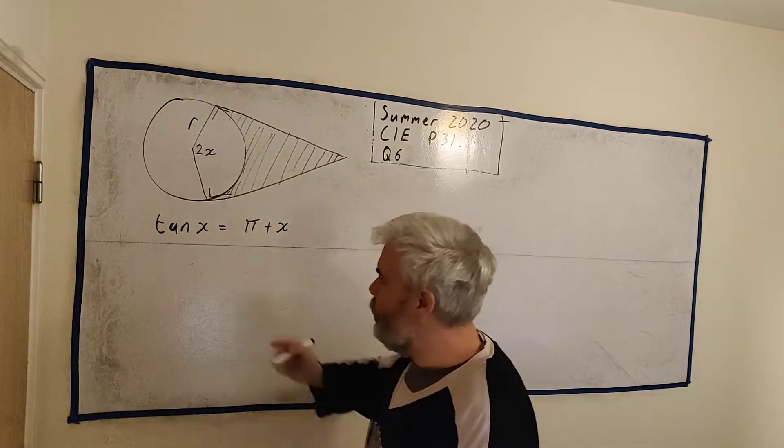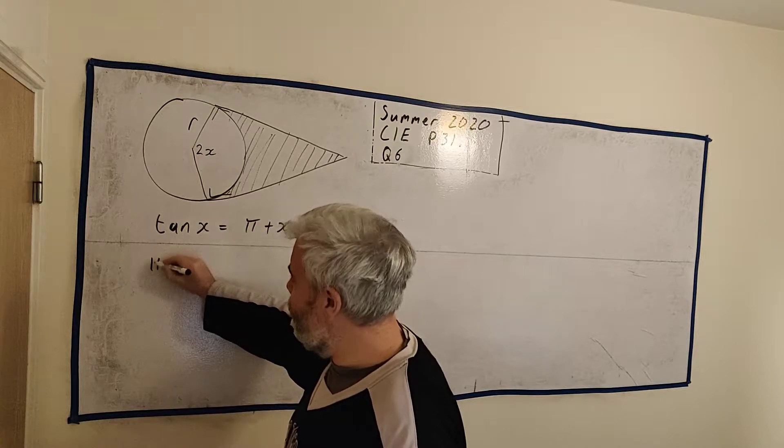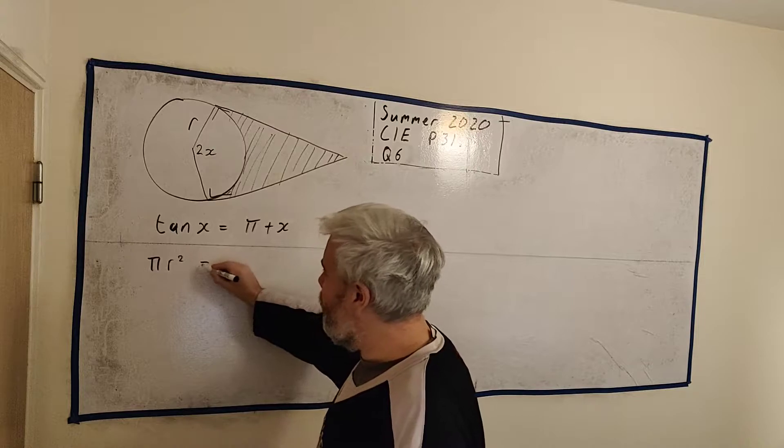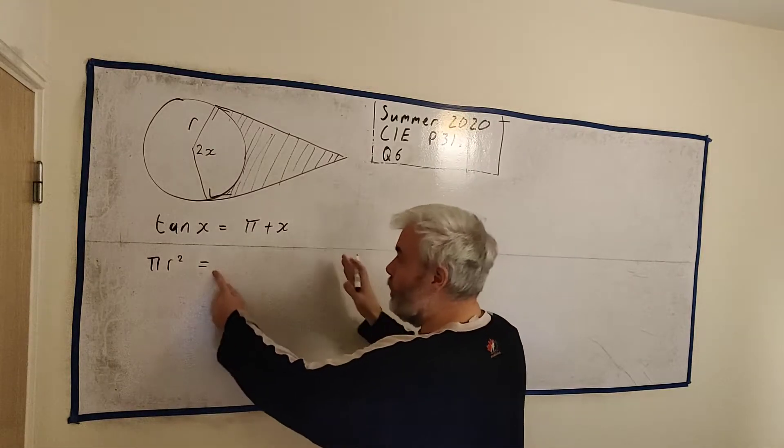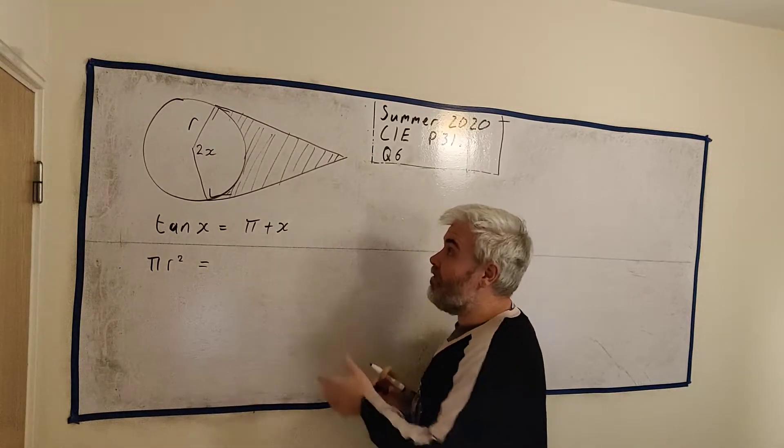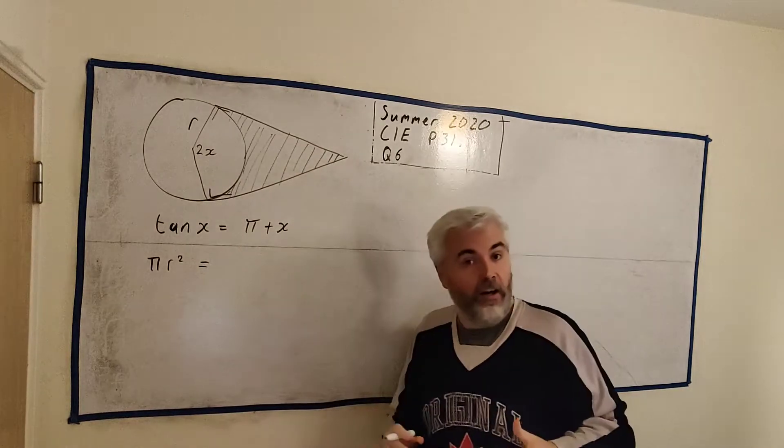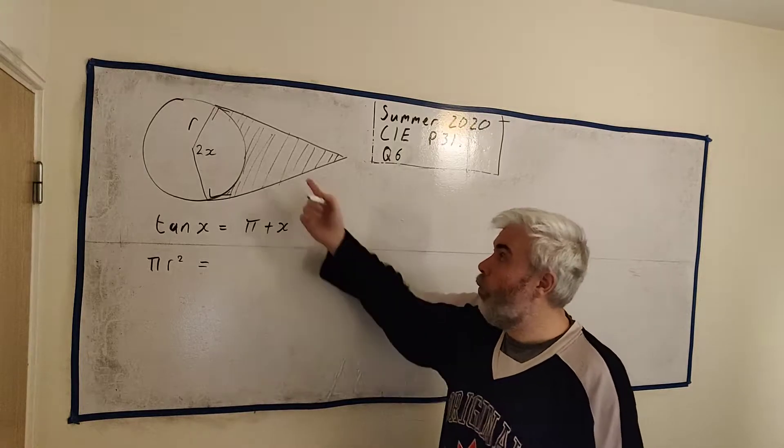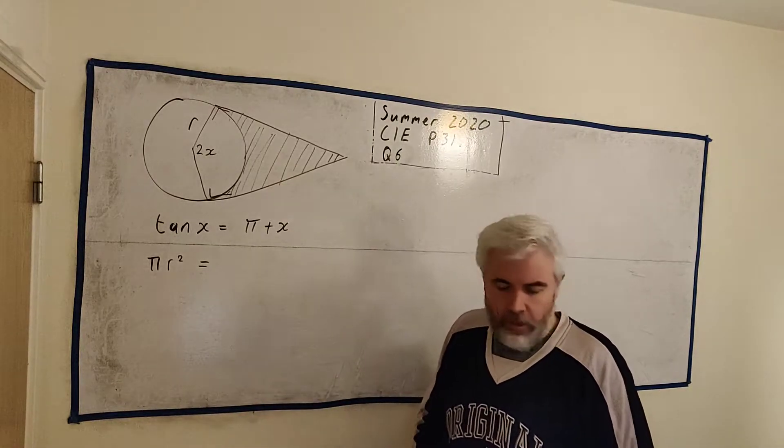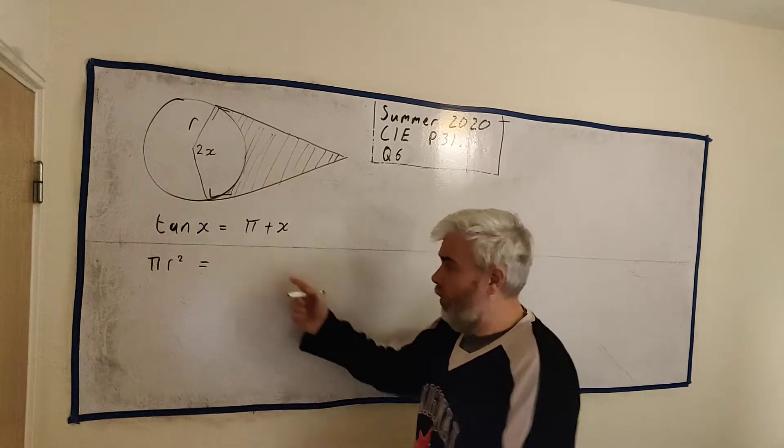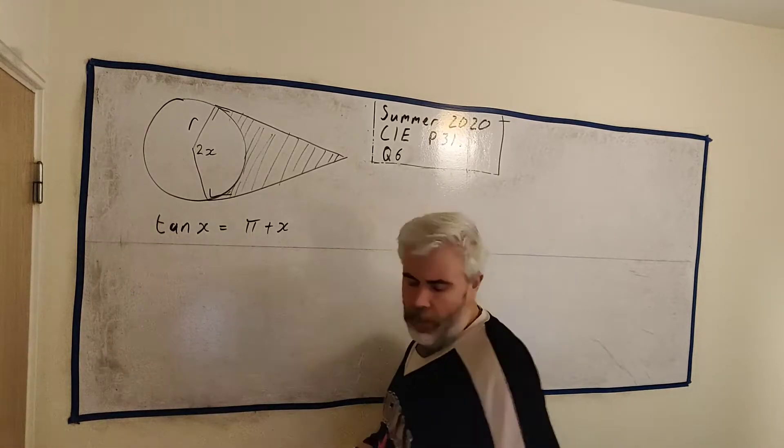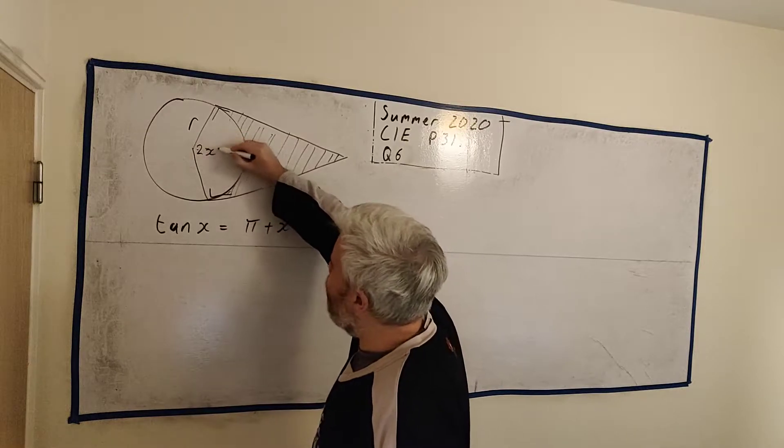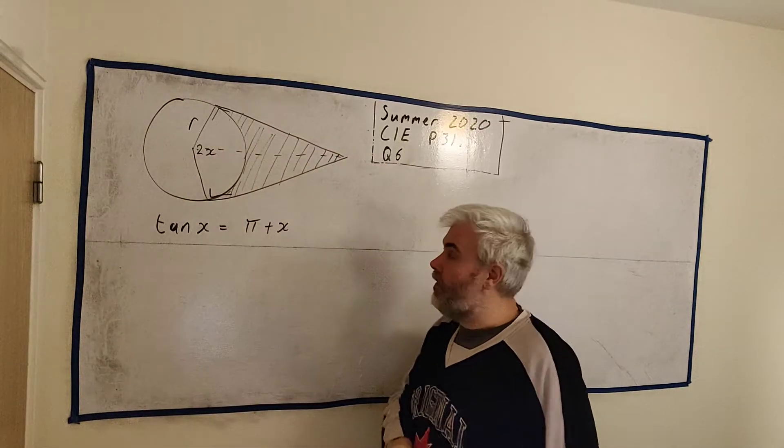The first thing to do is to find where this comes from. It gives us a few bits of information here. They tell us this shaded region here is equal to the circle. So basically, at some point, we're going to get an equation, because I can write the circle down right now. The area of the circle is pi r squared. So we're basically just going to get pi r squared equals something, that something being the shaded area.